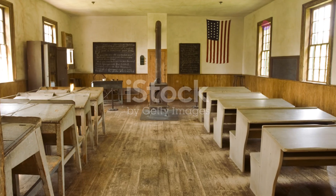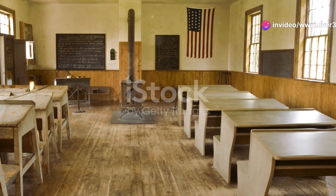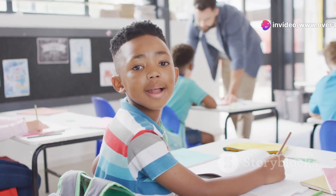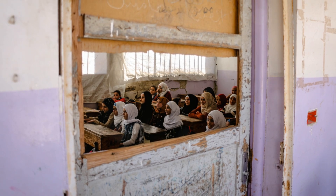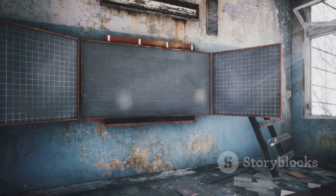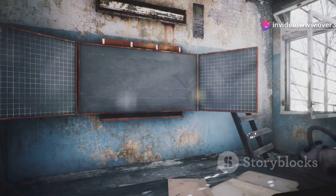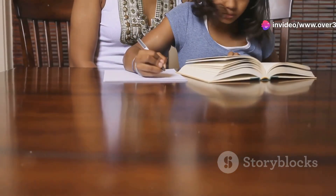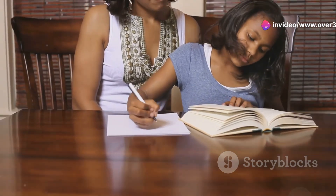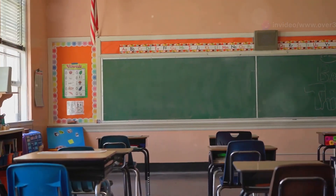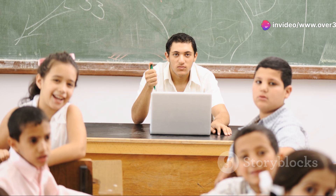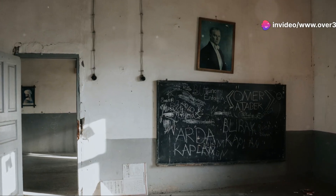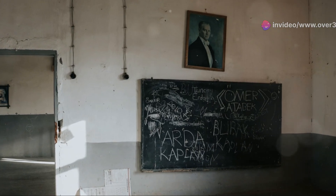The Civil War ended slavery, but it also brought new challenges to education. The nation faced the task of educating millions of newly freed African Americans. Reconstruction efforts included the establishment of schools for black children. However, these schools often faced discrimination and lack of funding. Despite the obstacles, African Americans saw education as a path to equality and opportunity. The post-Civil War era was a time of great change and upheaval, yet the belief in education as a powerful tool for social progress endured — a beacon of hope for a nation striving to rebuild and redefine itself.